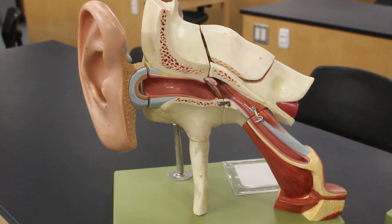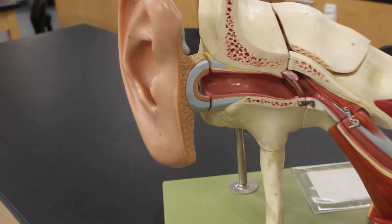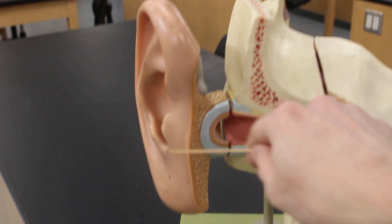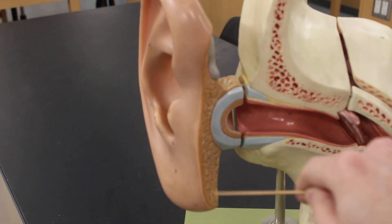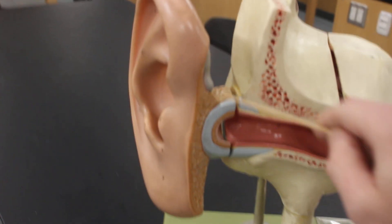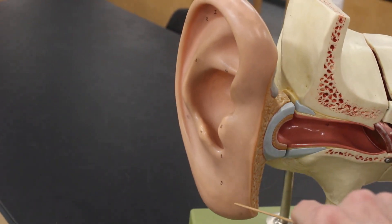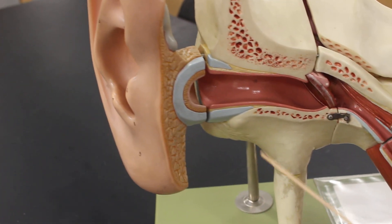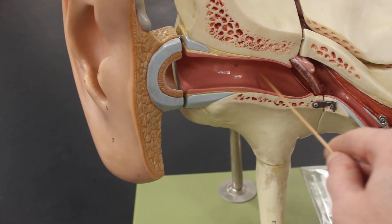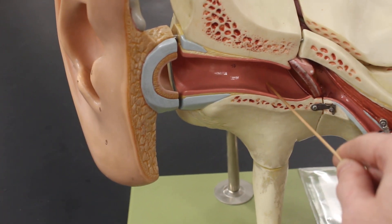Here is the ear model. This area all the way to about here is the external ear. The external ear includes the fleshy portion on the outside, which is the auricle, and this area, which is the external acoustic meatus or external auditory meatus.